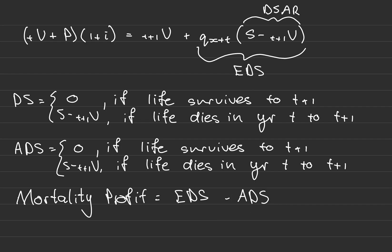Mortality profit is the expected death strain minus the actual death strain. The expected death strain is the amount the insurer expects to pay above what is held in reserves at the end of the year if a policyholder dies. The actual death strain is the actual amount paid above those reserves. The difference arises from expected versus actual policy behavior: if fewer people die than expected, the actual death strain is smaller than expected, resulting in a mortality profit because less was paid out than anticipated.